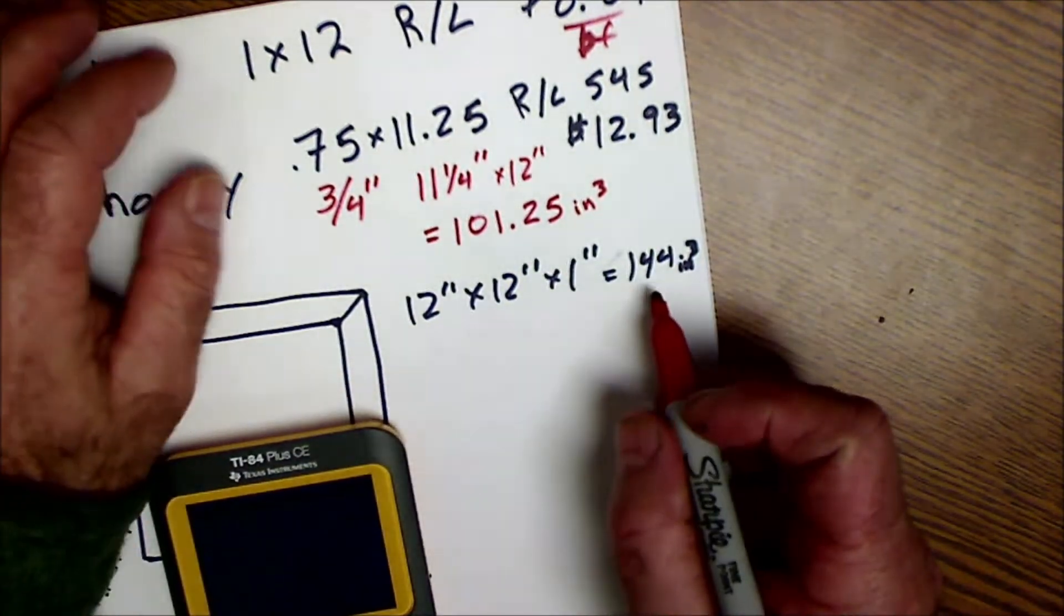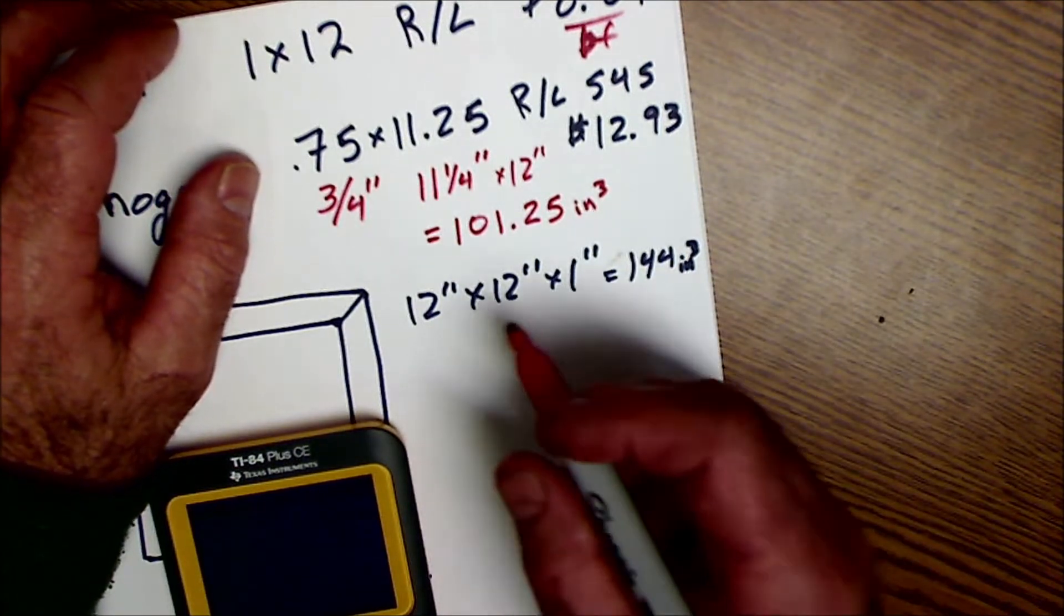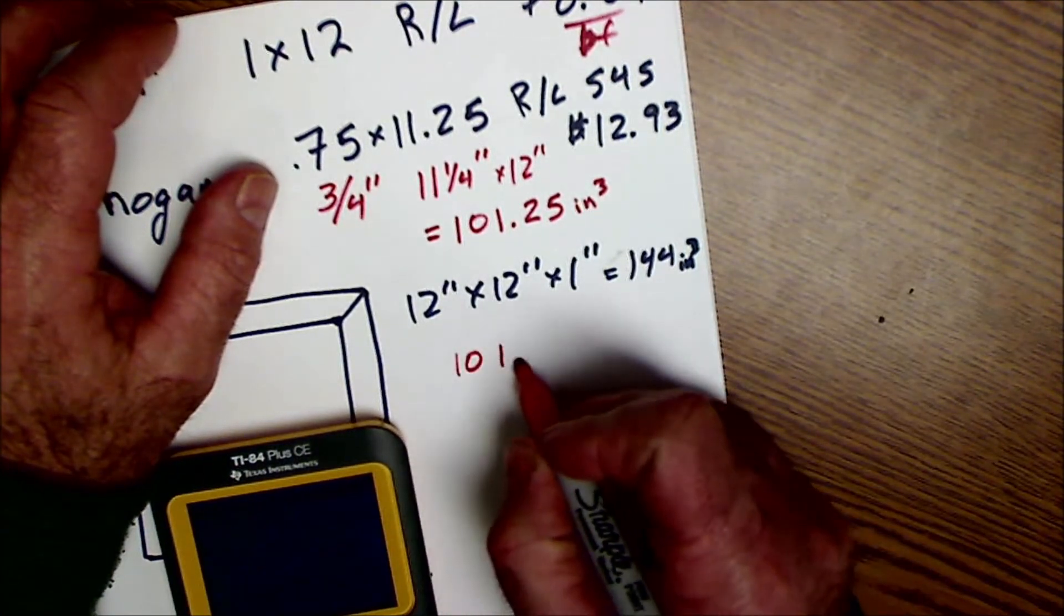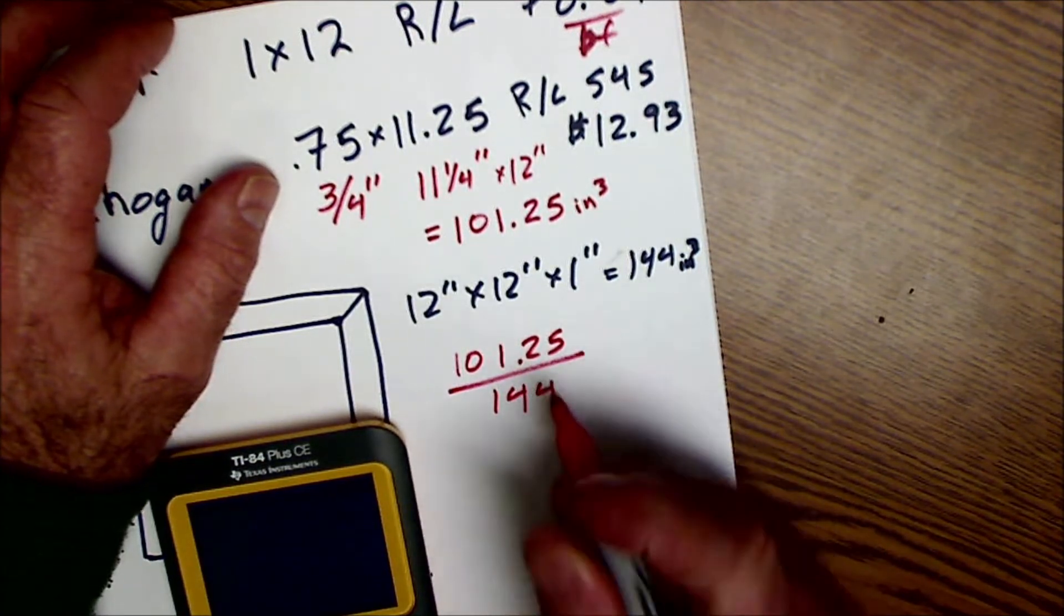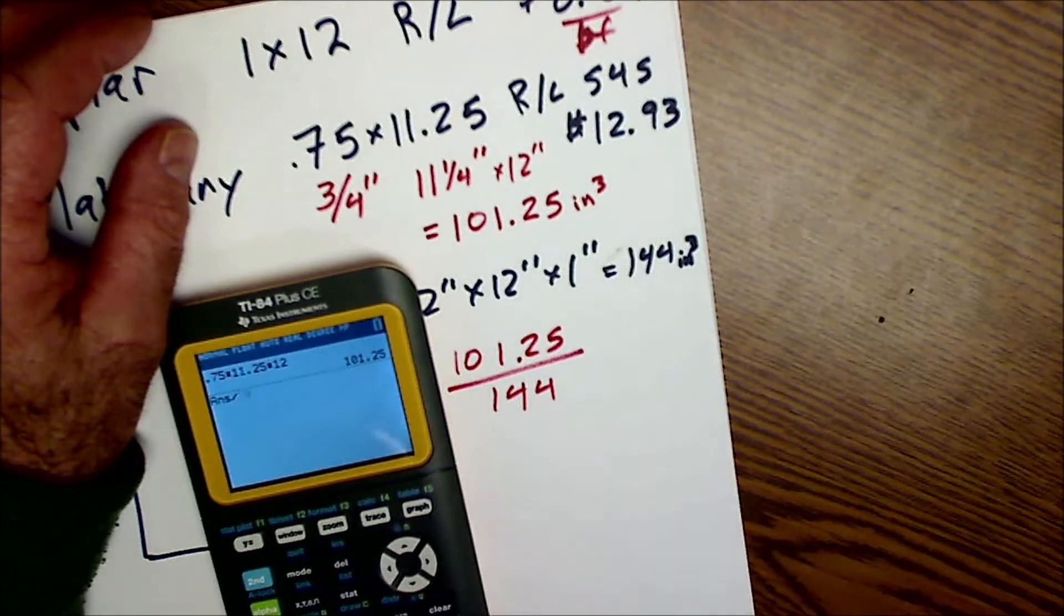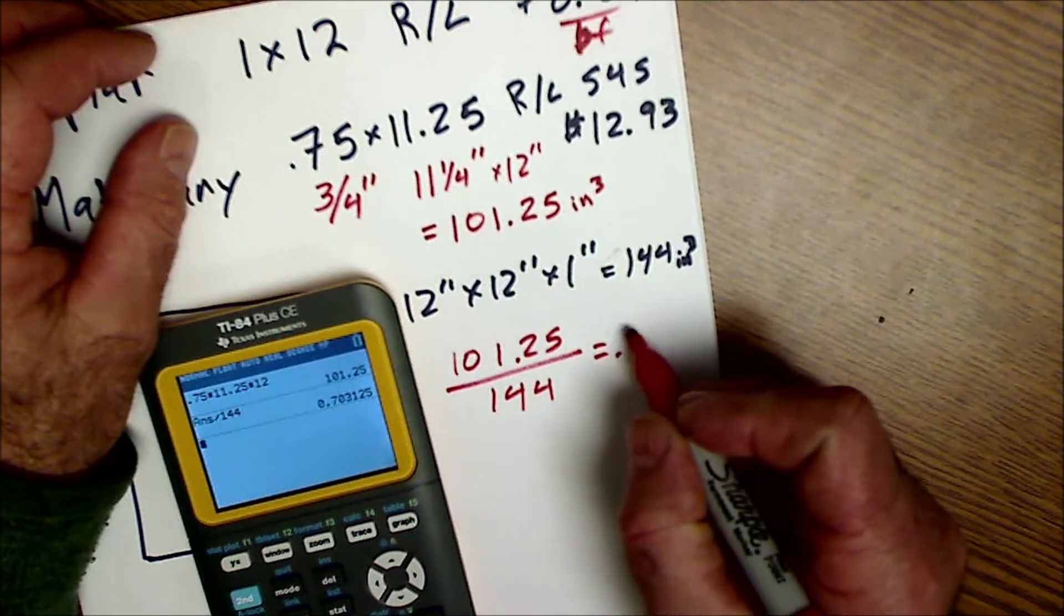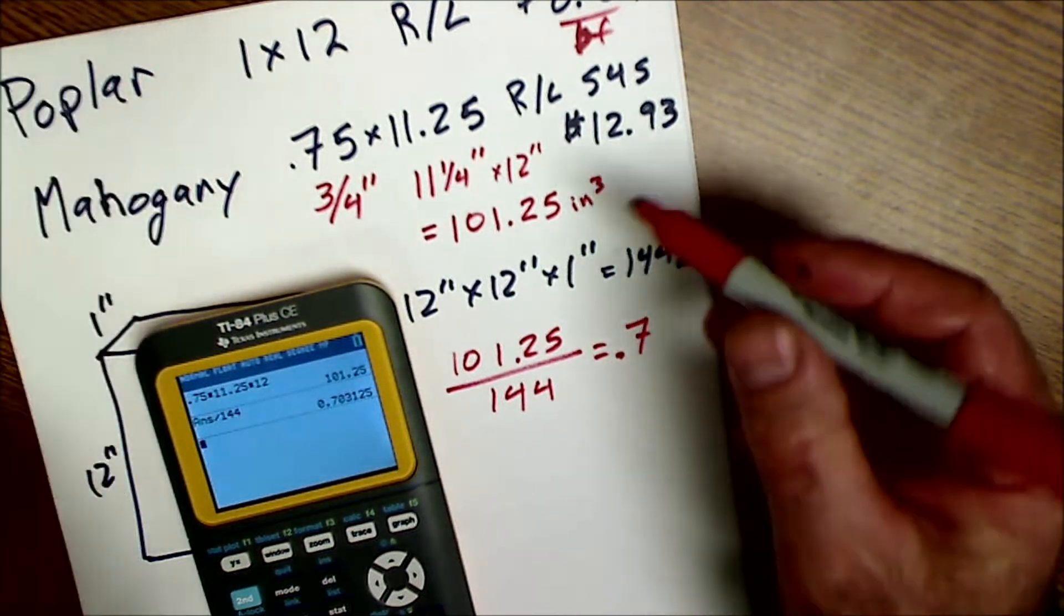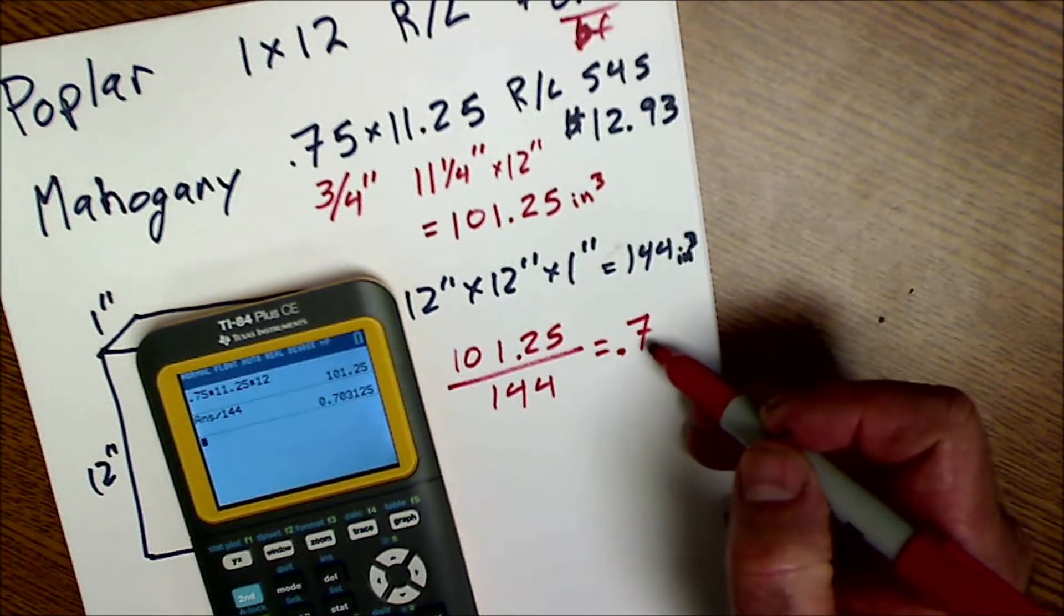So one linear foot of this mahogany is 101.25 cubic inches. And I know 144 cubic inches to the board foot. So if I do 101.25 divided by the 144 cubic inches, so I take that value 101 and divide it by 144, that gives me 0.703. So that means there in one linear foot, there are 0.7 board feet.